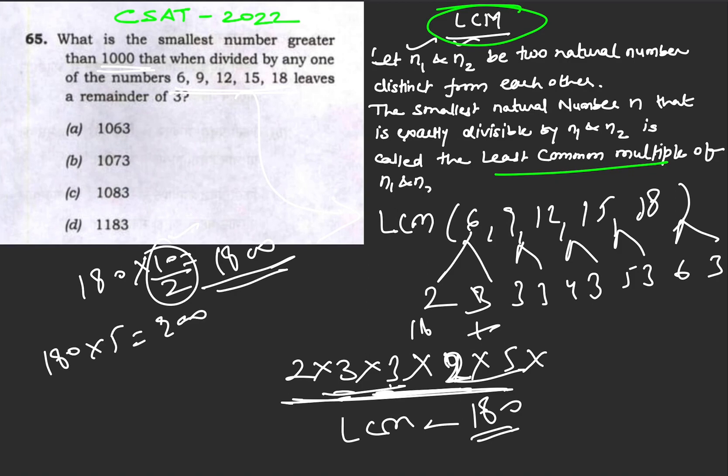180×5 gives us 900. This is slightly less than 1000, so we need to move one up. We get 1080. We need a remainder of 3, so we add 3, and we get our answer: 1083.